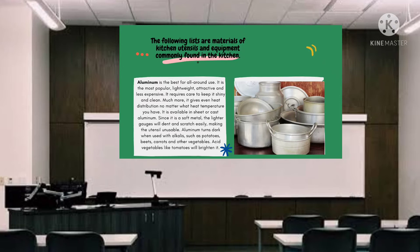The following list are materials of kitchen utensils and equipment. First, aluminum — it's the best for all-around use. It is the most popular, lightweight, attractive, and less expensive. It requires care to keep it shiny and clean. It gives even heat distribution no matter what heat temperature you have. It is available in sheet or cast aluminum. Since it is a soft metal, the lighter gauge will dent and scratch easily, making the utensil unusable. Aluminum turns dark when used with alkalis such as potatoes, beets, carrots, and other vegetables. Acid vegetables like tomatoes will brighten it.